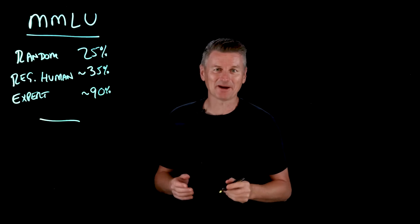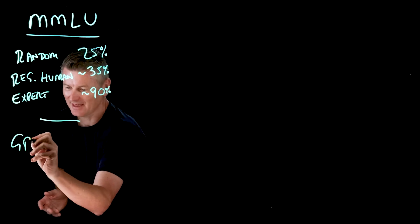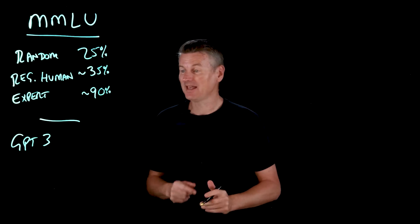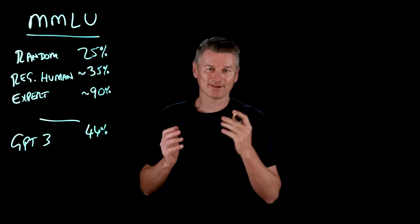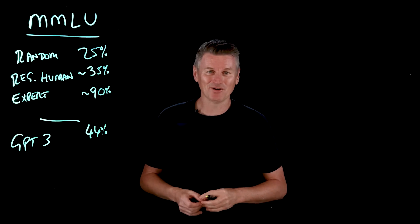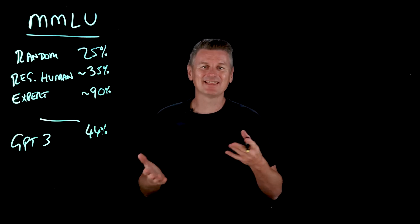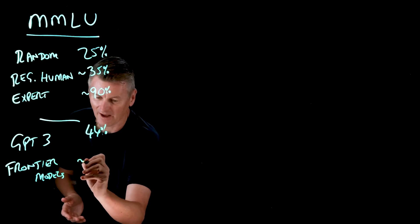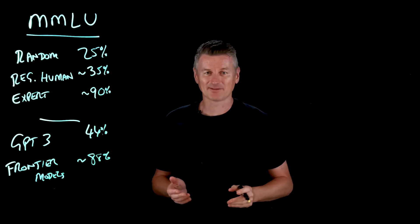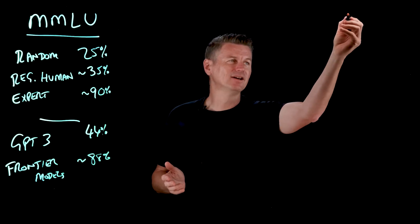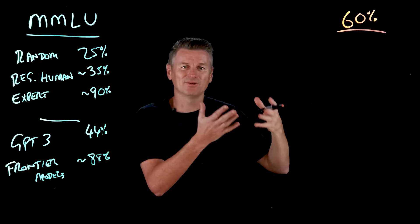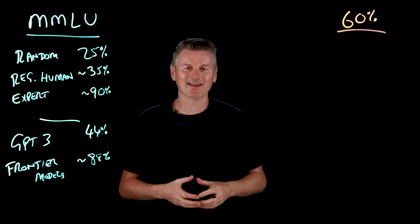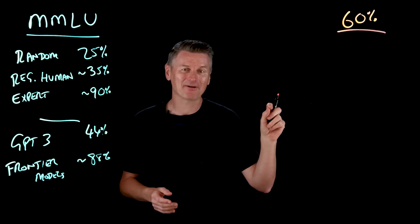What about AI models? When GPT-3 came out in 2020 — a 175 billion parameter model — it posted an MMLU score of 44%. That's better than average, but far from mastery. Today's frontier models can score in the high 80s, around 88%. Using 60% as a practical cutoff — above which a model begins to look like a competent generalist that can answer everyday questions — what is striking is how quickly that 60% barrier has fallen to ever smaller models.